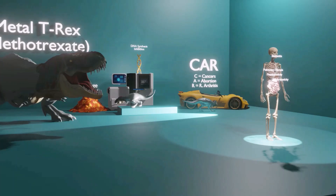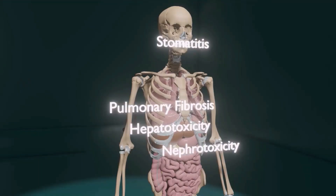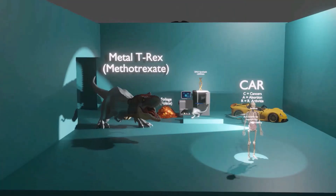The anatomy model in the lab reminds us of important adverse effects of methotrexate: stomatitis, where there's inflammation of the oral mucosa potentially leading to ulceration; pulmonary fibrosis, which could potentially lead to bloody vomiting; hepatotoxicity, probably the most well-known and most tested adverse effect — doctors need to monitor patients' serum liver levels while prescribing methotrexate; and nephrotoxicity, as methotrexate is both hepatotoxic and nephrotoxic.